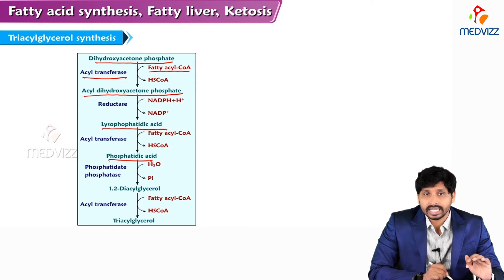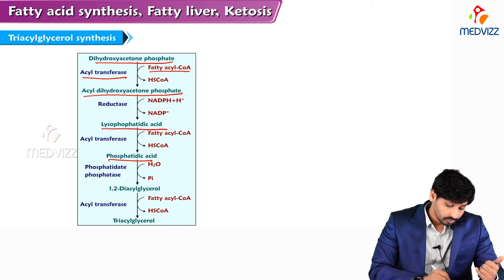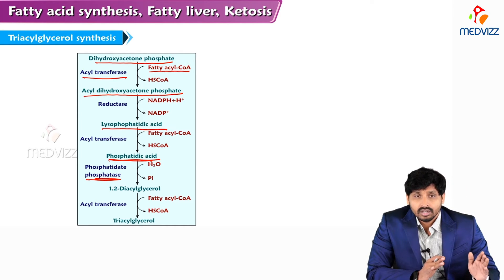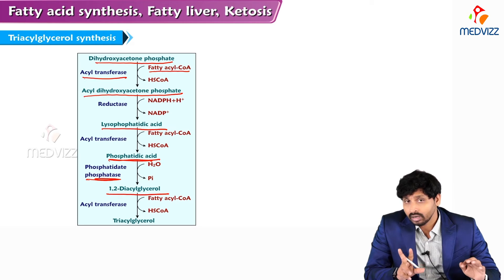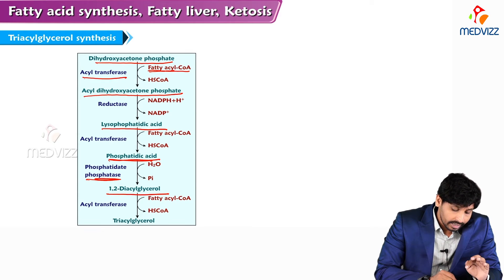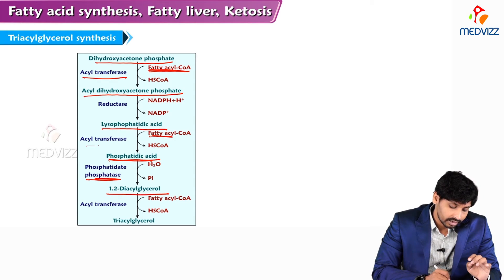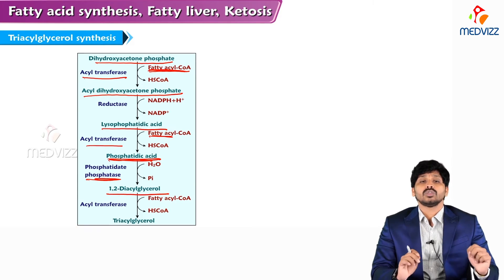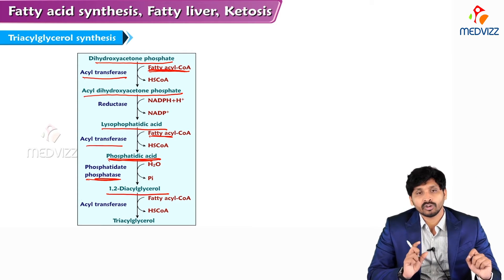Lysophosphatidic acid is converted to phosphatidic acid — we have already covered lysophosphatidic acid and phosphatidic acid in the phospholipid section of lipid chemistry. In phosphatidic acid, the enzyme phosphatidate phosphatase removes the phosphate group to form 1,2-diacylglycerol. At this point, two fatty acids have already been attached: one donated by a fatty acyl-CoA via acyltransferase, and another added by a second acyltransferase to form phosphatidic acid, which carries two fatty acids.